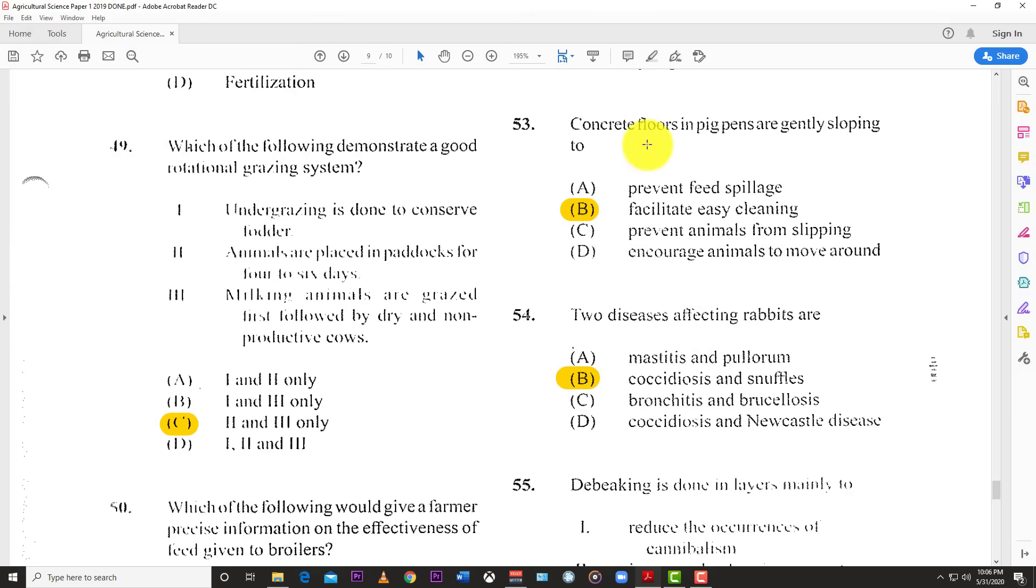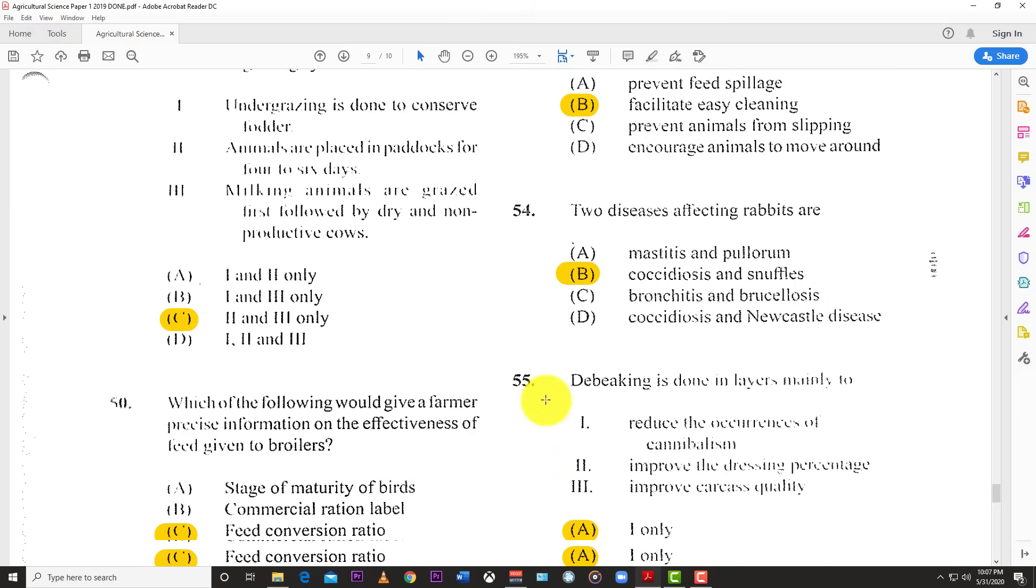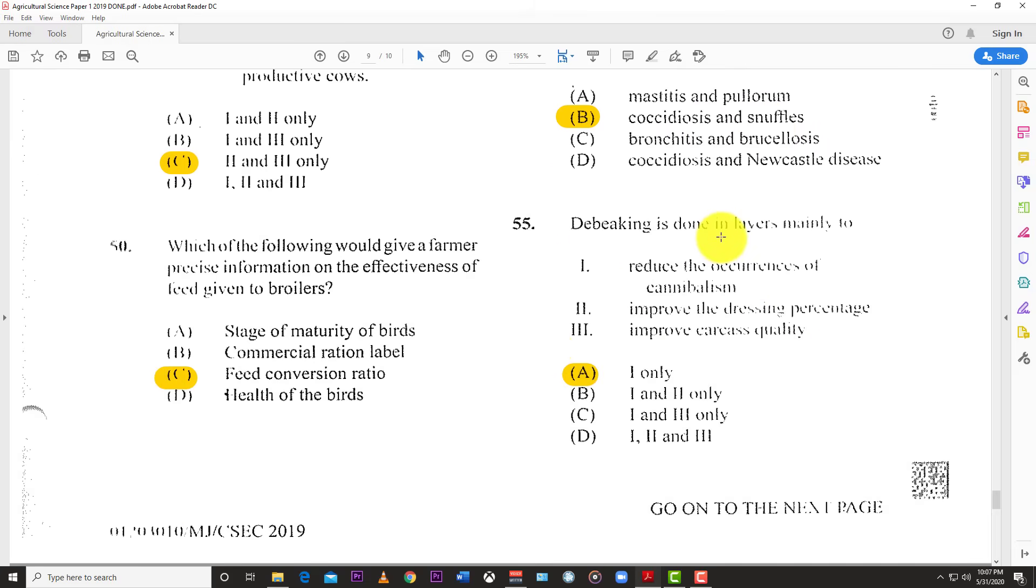Number 53: Concrete floors in pig pens are generally gently sloping to facilitate easy cleaning. Just spray down with a hose and water will run back down. Number 54: Two diseases affecting rabbits are coccidiosis and snuffles. Number 55: Debeaking is done in layers mainly to reduce the occurrence of cannibalism. You don't want them picking at each other.